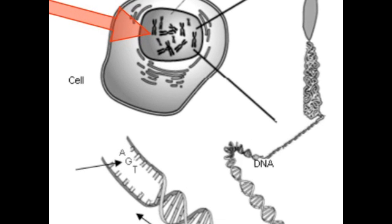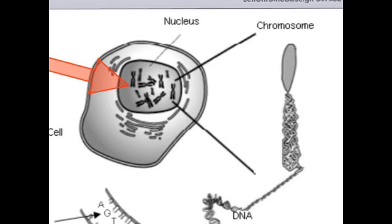Inside the nucleus, there are chromosomes. Chromosomes are only visible during mitosis, or when the cell is dividing. Humans have 46 chromosomes regularly.